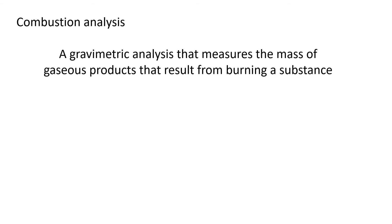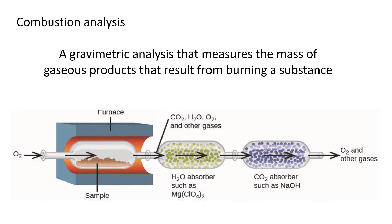Moving on to combustion analysis. Combustion analysis is actually a type of gravimetric analysis — it again uses the masses of certain compounds to find out their composition. In combustion analysis, a substance is burned and the gases that are released are collected and weighed.